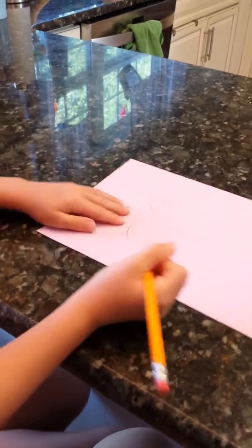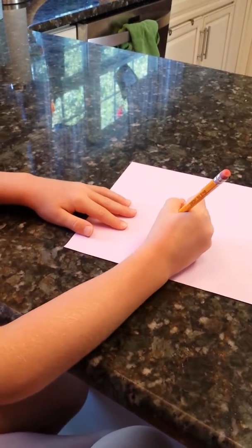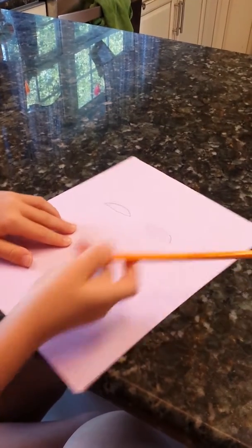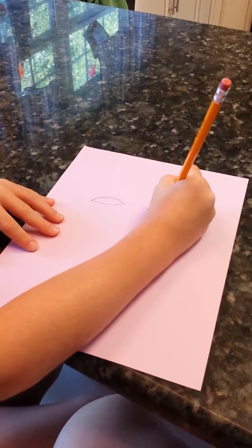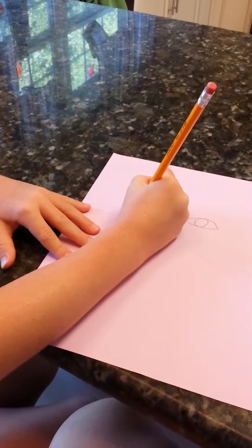Then draw another line like that under them. Like this. And then you're going to draw a circle in the middle and same for the other eye.